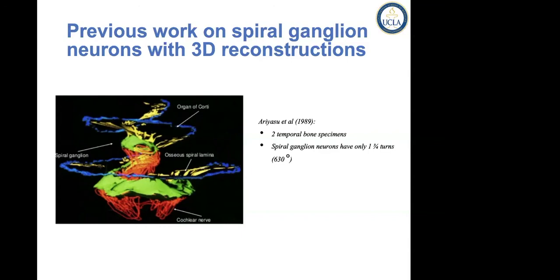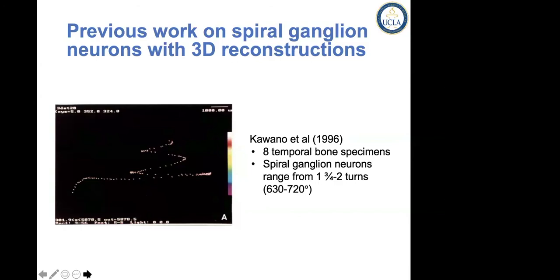What they reported was that spiral ganglion neurons are only present up to 1.75 turns, but this measurement was not done from the round window as a point of reference. In 1996 in Melbourne with Graeme Clark, Carano did similar studies with a manual reconstruction — this must have been an extraordinary amount of time. They used eight temporal bones, and the conclusion was that in humans, spiral ganglion neurons extend from 630 to 720 degrees. Again, they did not use the round window as a point of reference.